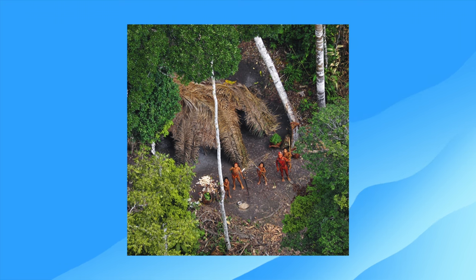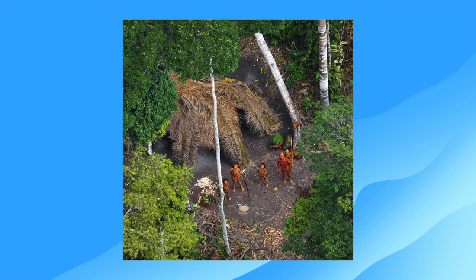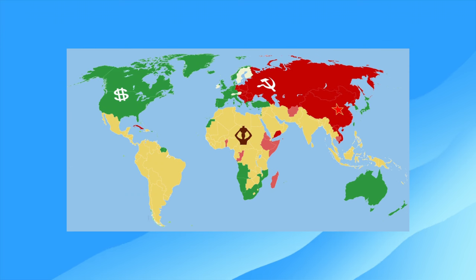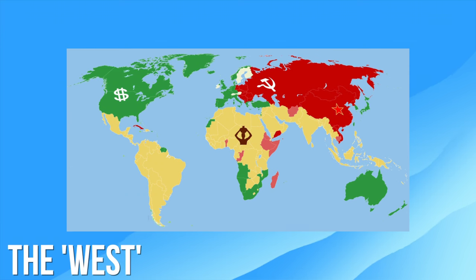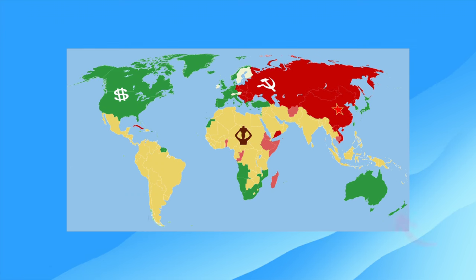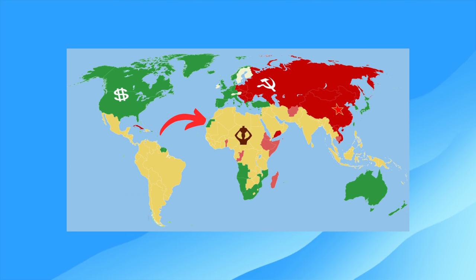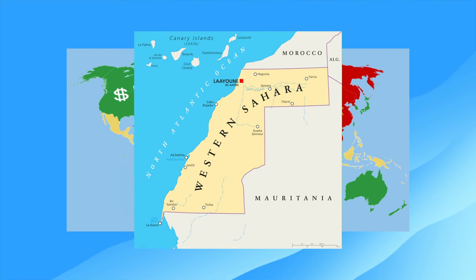The fourth world refers to widely unknown nations of indigenous peoples and first nations living within or across national state boundaries. This map shows how the world looked politically post-World War II. First world countries are in green, second in red, third in yellow and neutral countries in white, with newly communist nations in light red. First world countries are also known as the West, even though many are nowhere near the Western Hemisphere, such as New Zealand, Japan and Australia. There are a couple of anomalies on this map, such as Cuba being part of the second world even though it is geographically within the West, and Western Sahara being classified as a first world country.